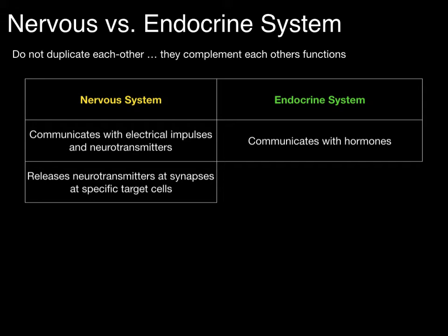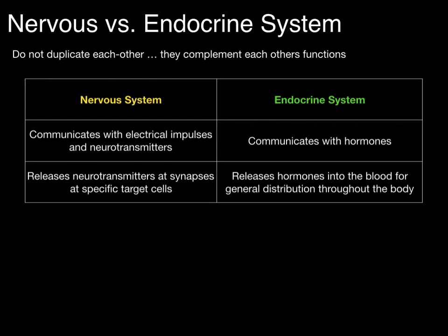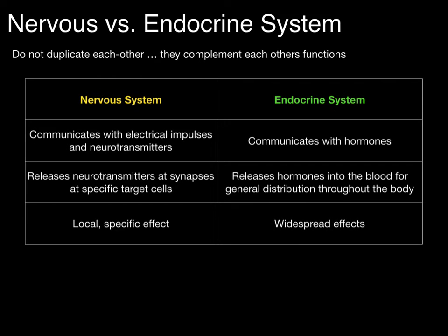The nervous system releases neurotransmitters at the synapse — the space between neurons — at specific target cells, either neuron to neuron or neuron to effector tissue. Whereas the endocrine system releases hormones into the bloodstream for general distribution throughout the body. An endocrine gland secretes hormones into the blood and they get distributed throughout the entire body. Therefore, the nervous system acts very locally and very specifically, whereas the endocrine system has a very widespread effect.